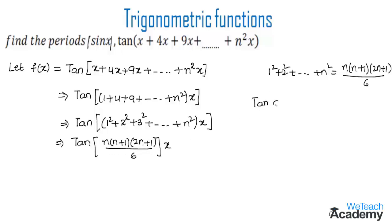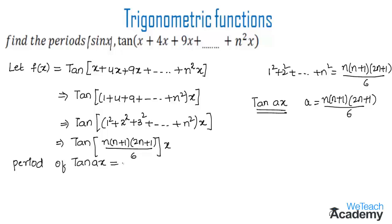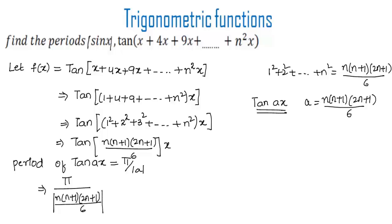This gives us tan(n(n+1)(2n+1)/6 · x), which is in the form tan(ax) with a = n(n+1)(2n+1)/6. Since the period of tan(ax) is π/|a|, the period of tan(x + 4x + 9x + ... + n²x) is π divided by n(n+1)(2n+1)/6, which equals 6π / [n(n+1)(2n+1)].